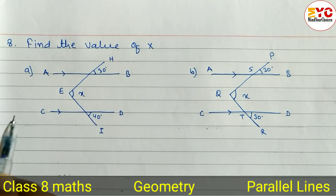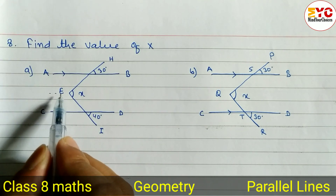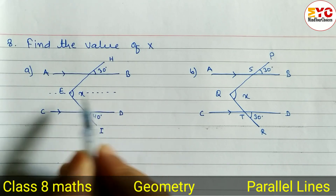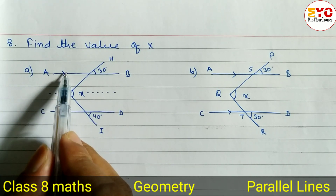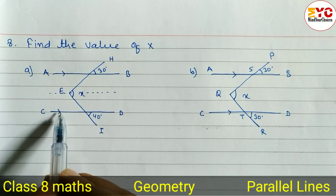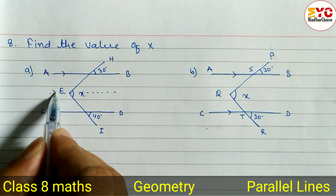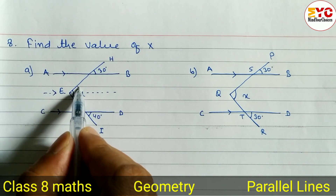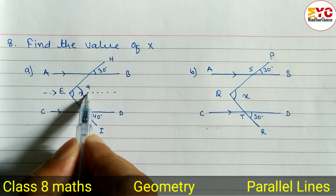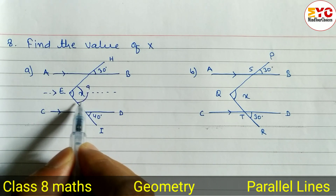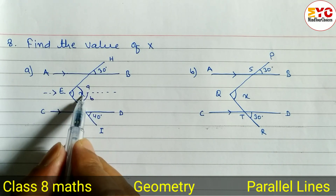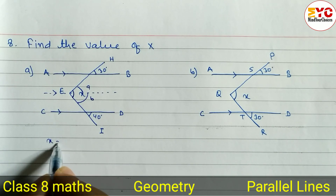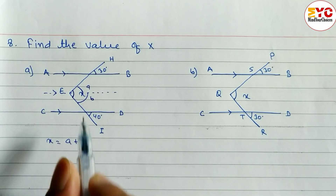First of all, what we have to do is draw one line which is parallel to AB and CD. Two parallel lines are given here, AB and CD, and here also we have to draw one another parallel line. Let this upper part be A and the downside be B. So what is the value of x? x means the whole angle, so we can write x is equal to A plus B.